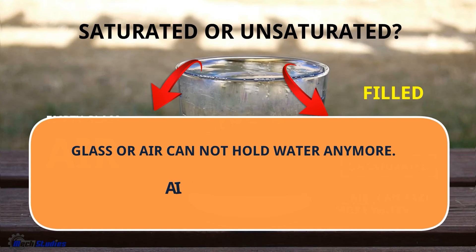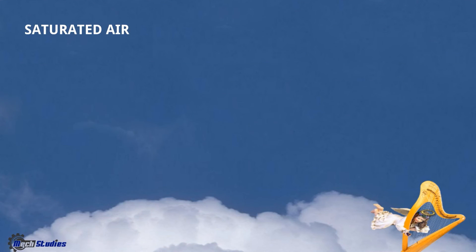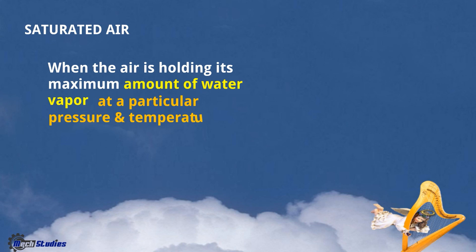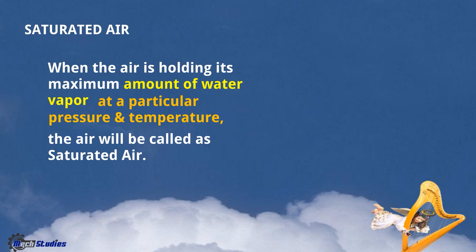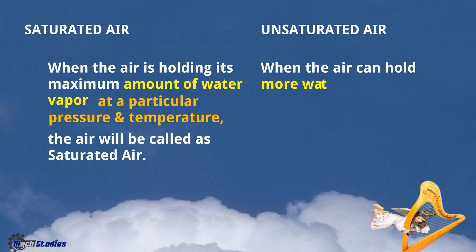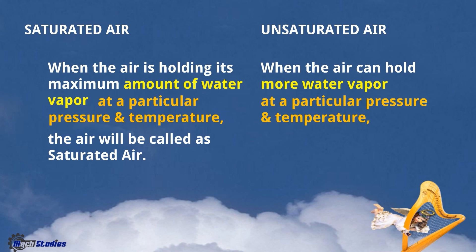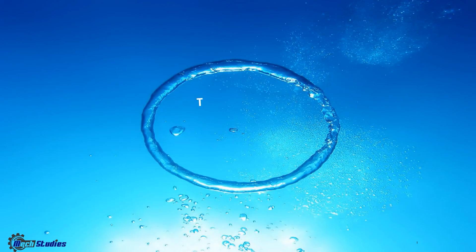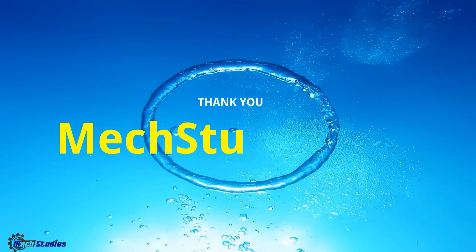The glass or air cannot hold water anymore, and this situation is called saturated. So we can define: saturated air — when the air is holding its maximum amount of vapor at a particular pressure and temperature, it is called saturated air, and the condition is called saturation. Unsaturated air — when the air can still hold more water vapor at a particular pressure and temperature, it is called unsaturated air. I hope the concept is clear. Thank you and stay tuned to mixstudies.com.